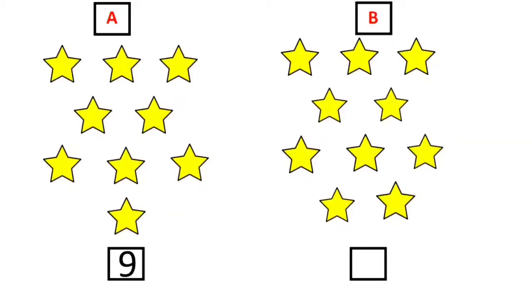Now let's count the number of stars present in set B. 1, 2, 3, 4, 5, 6, 7, 8, 9 and 10.